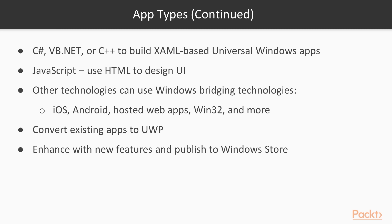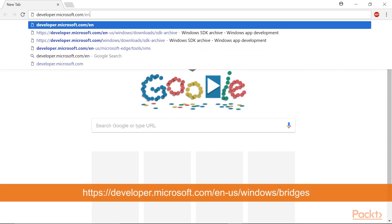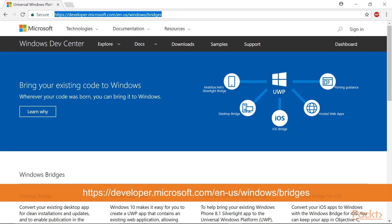In case you are from other technologies, you can still build apps for Windows 10 using Windows bridging technologies for iOS, Android, hosted web apps, Win32, and more. These bridges for Windows allow you to convert your existing apps to UWP so that you can enhance them with new features and publish them to the Windows Store to reach all devices running Windows 10. To know more about Windows bridging technologies, check out the provided link.